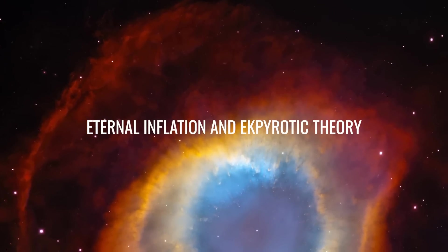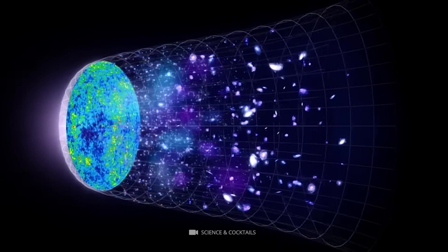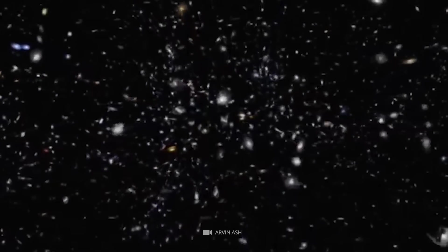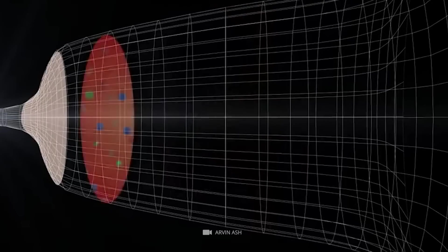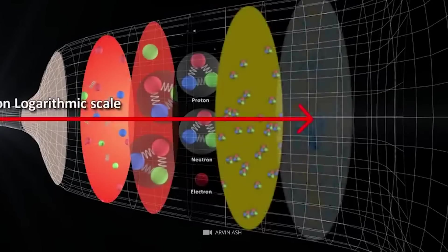Eternal Inflation and Epirotic Theory. Eternal inflation refers to the infinite expansion of the universe. Eternal inflation is a theoretical process that describes a universe expanding at an exponential rate. This expansion is eternal because it can always continue repeating. It is an expansion that will continue forever and never stop.